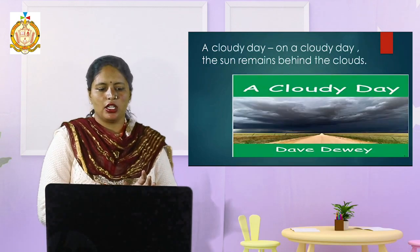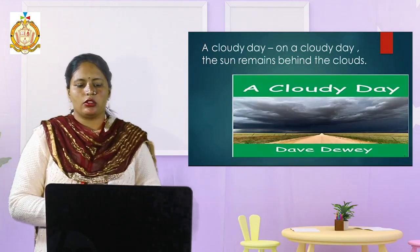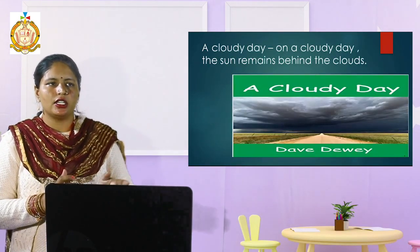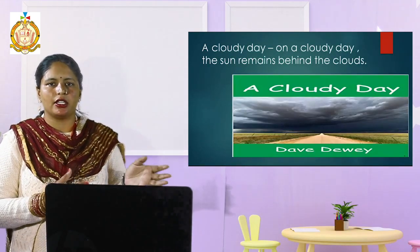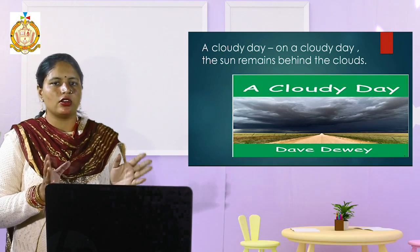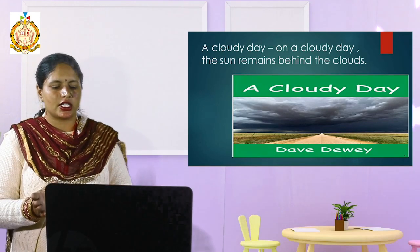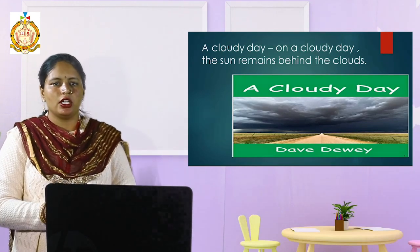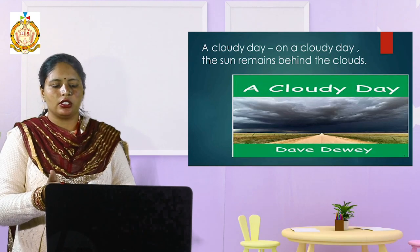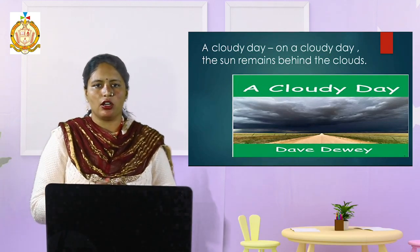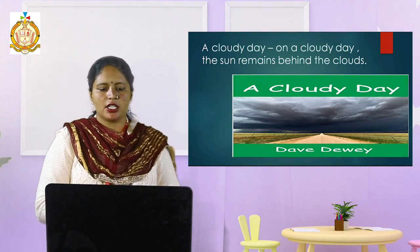Next is a cloudy day. On a cloudy day the sun remains hidden behind the clouds. You can see the dark clouds in the sky — here is an example picture showing dark clouds in the sky.